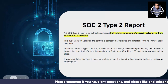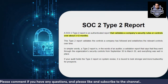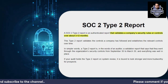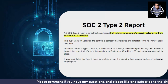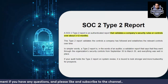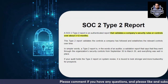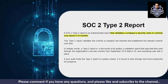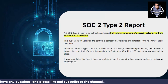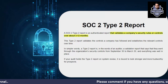In SOC 2 type two, you validate that all the controls are operating effectively — that's where effectiveness comes into place. The type two report is taken over an interval of about 3 to 12 months, ensuring controls are established and working over time. For example, from September 30 to March 30 the organization has been following these controls. You get an actual date range showing effectiveness, making the report stronger and more trustworthy.